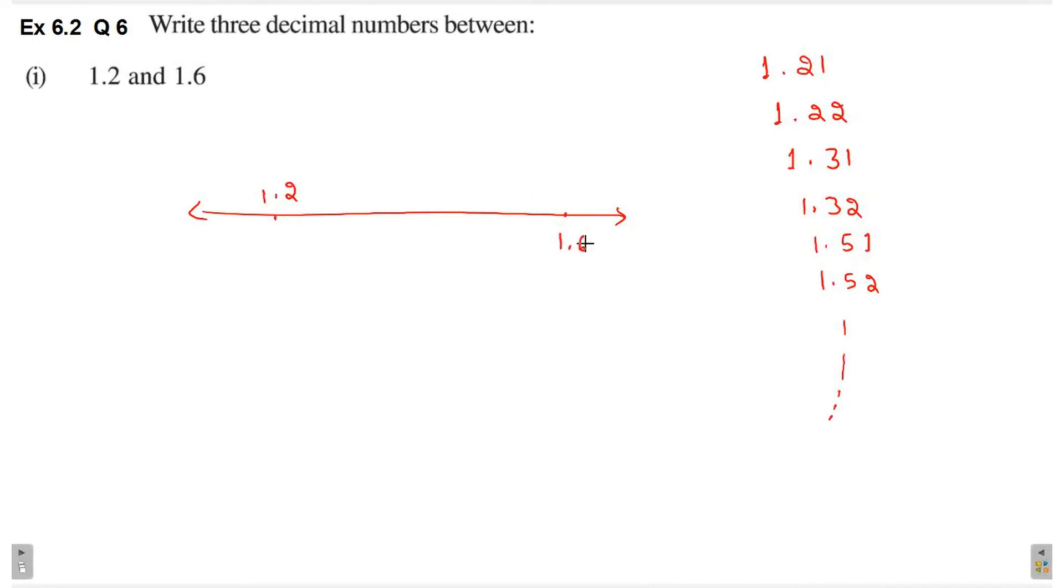You can also write 1.2 as 1.20, right? So 1.21, 1.22, 1.31, 1.32, 1.51, 1.52, all these numbers are greater than 1.2 and smaller than 1.6. Because 1.6 will come here at the end, right?